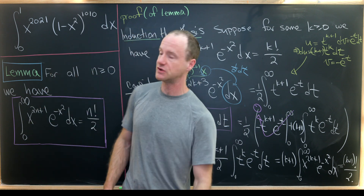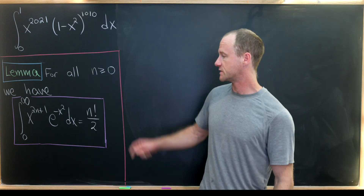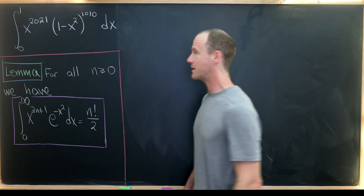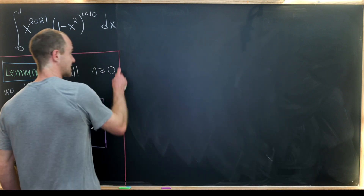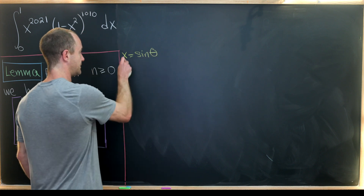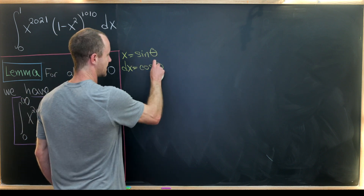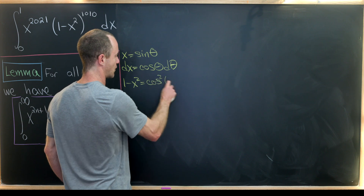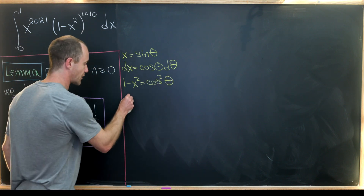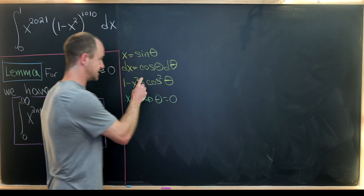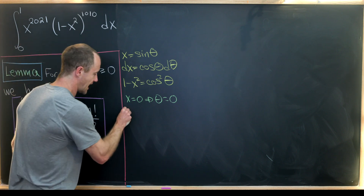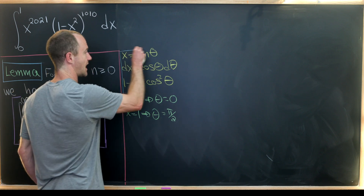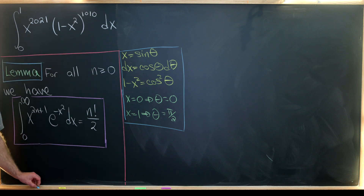Now we're ready to attack our main result using this lemma. We'll start with a trigonometric substitution. Since we have a 1 minus x squared term, this motivates the substitution x equals sine theta, so dx equals cosine theta d theta, and 1 minus x squared equals cosine squared theta. When x equals zero, theta equals zero, and when x equals one, theta equals pi over two.